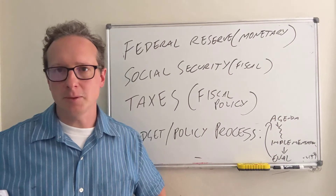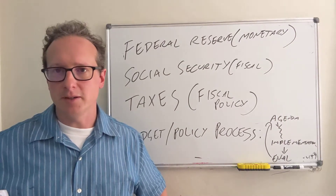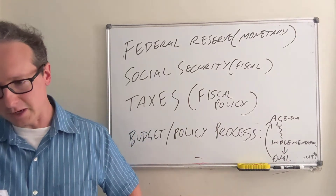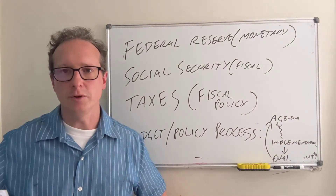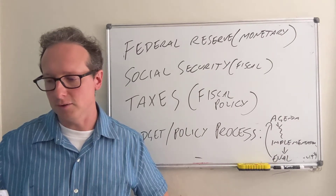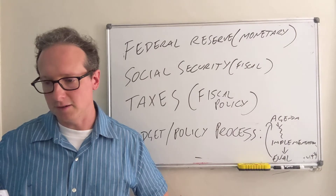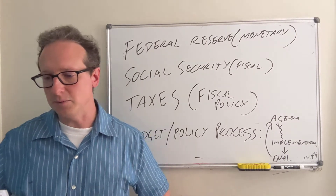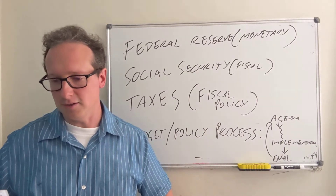We're going to be talking mostly about economic and social policy directed by the U.S. government. I want to put into context what it is the federal government does and what their relationship is with the American public — specifically the federal budget, why they spend on what they do, and the differences between what the federal government does and what some other agencies do.